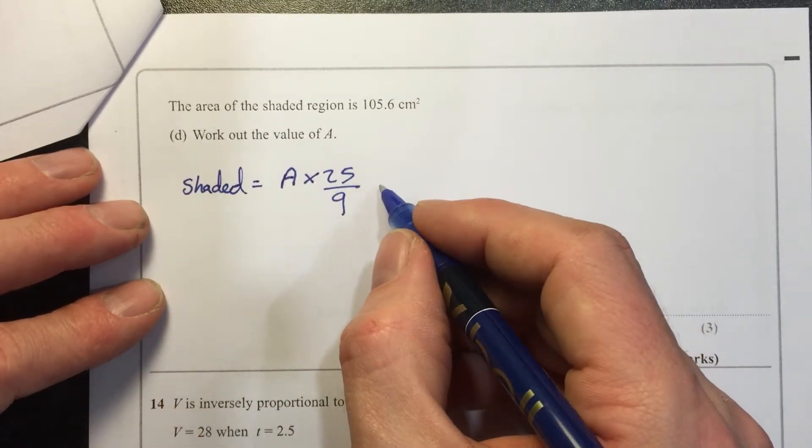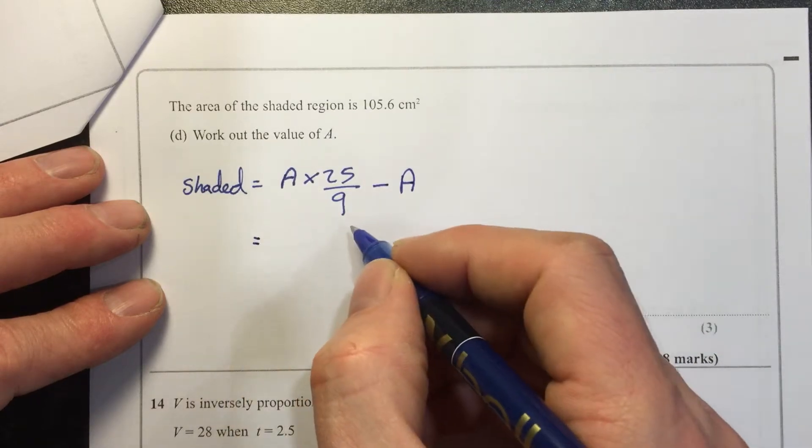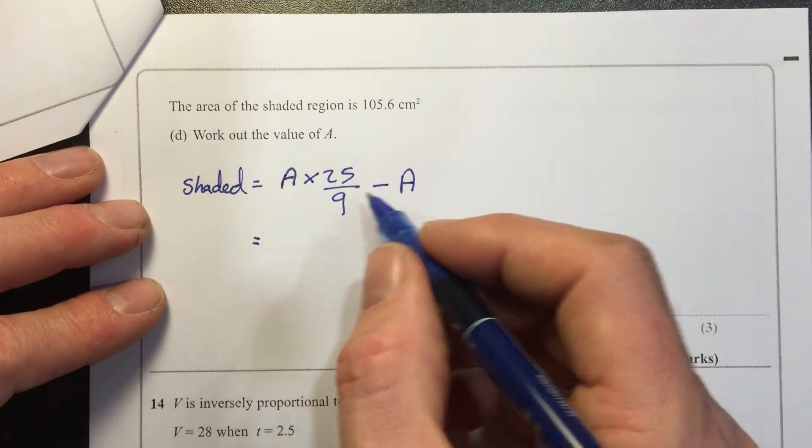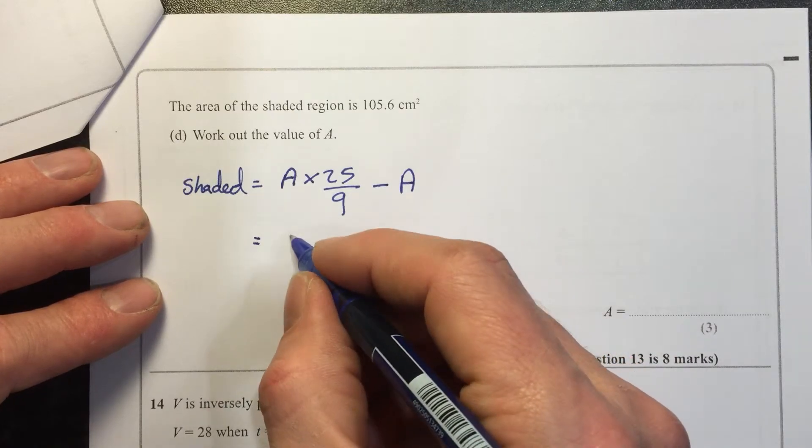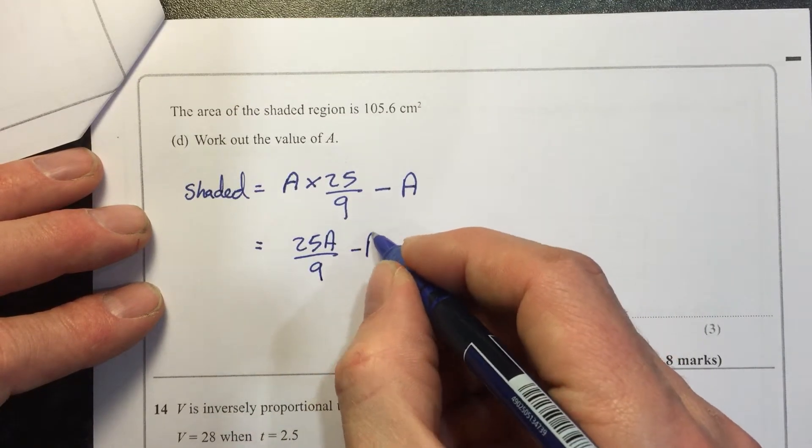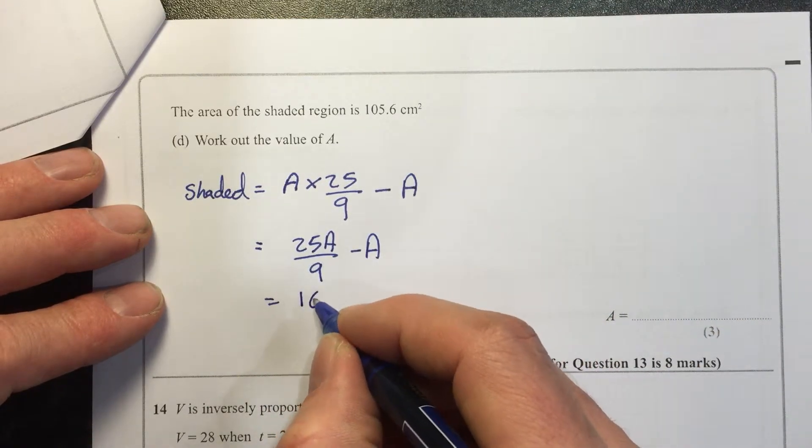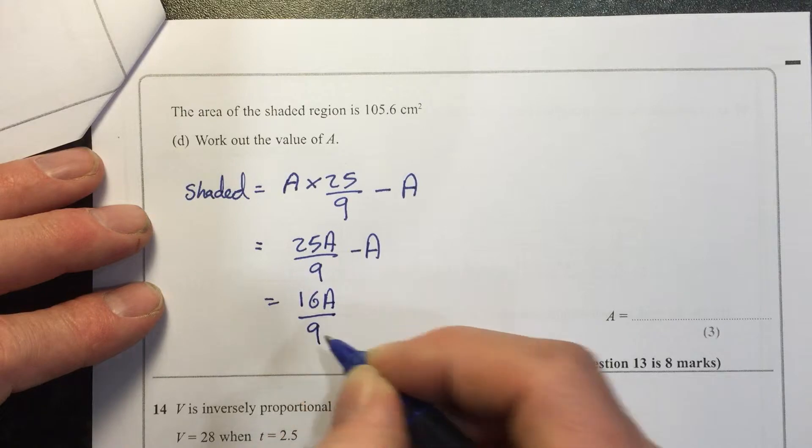And then to get the shaded bit, I've got to take away A. Okay, so if I take away A, I've got 25A over 9 minus A, so that's 16A over 9.